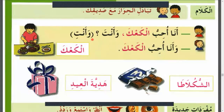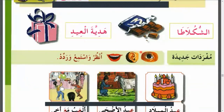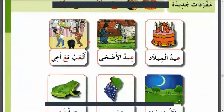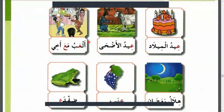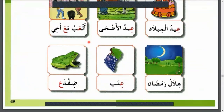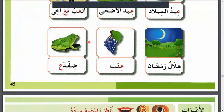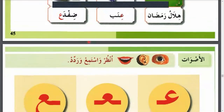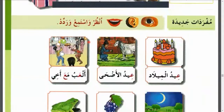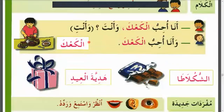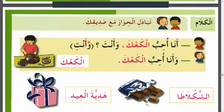They speak about some of these activities — for example: ana uhibbu al-ka'ka (I love cake). For the feminine form: wa ana uhibbu al-ka'ka. Vocabulary includes: al-shukulata (chocolate), hadiyyat al-eid (Eid gift), eid al-miladi, eid al-adha, al'abu ma'a akhi (I play with my brother), hilal Ramadan. We can use these words to build many sentences about Eid al-Fitr and the month of Ramadan.